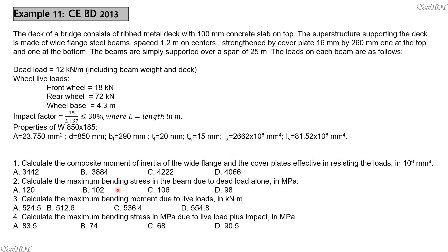Part 2: Calculate the maximum bending stress in the beam due to dead load alone. Bending stress equals maximum moment, which is at mid-span, times C — the distance from the neutral axis to either the top or bottom extreme fiber — divided by the moment of inertia calculated in Part 1.